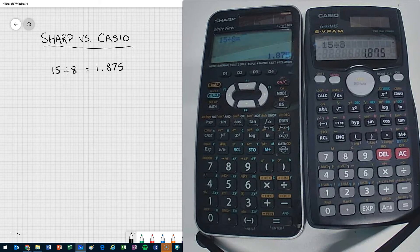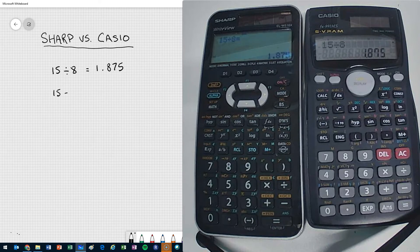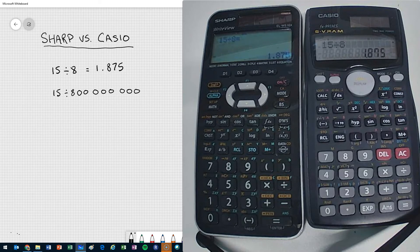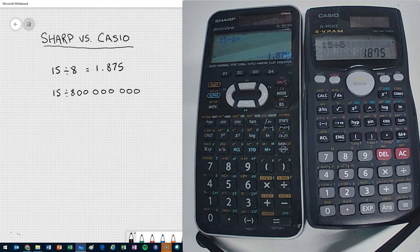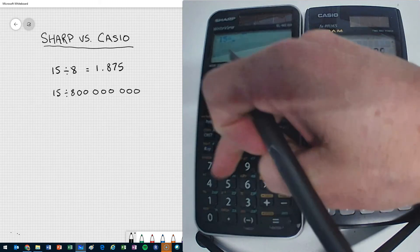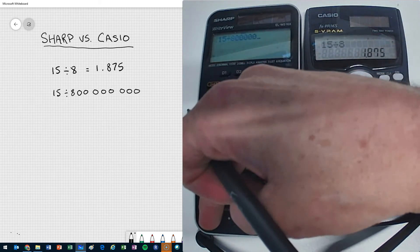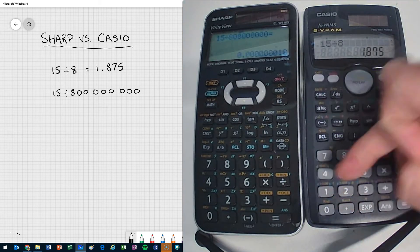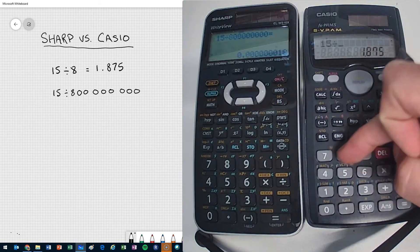But let's say that I divide 15 instead of by 8, where I'd expect 1.875. So I'm going to divide by a larger value. Let's try it. So 15 divided by 800 million, and 15 divided by 800 million.